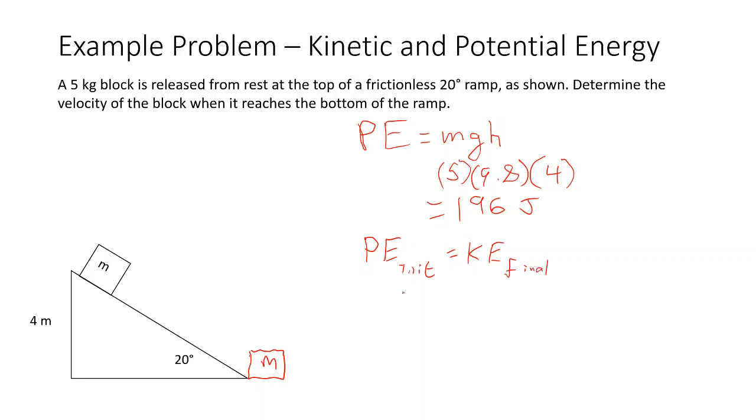That means we can say 196 joules is equal to our formula for kinetic energy, which is 1 half times the mass times the velocity squared, where this is the final velocity. So now if we plug in a value for our mass here, we're going to have 196 equals 1 half times 5 times the velocity squared.